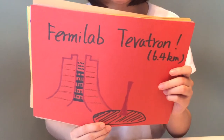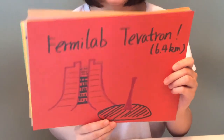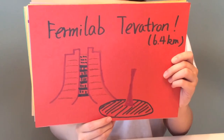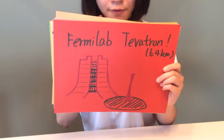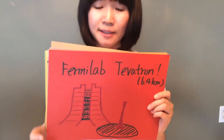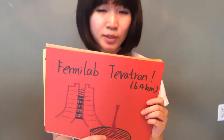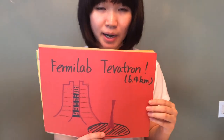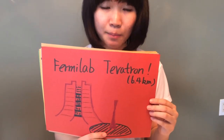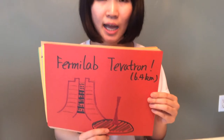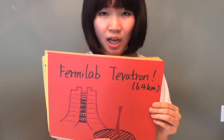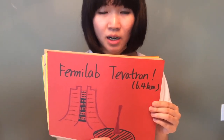The last one I'm going to talk about is the famous Fermilab Tevatron with a 64 km path length. It was used as a proton-antiproton collider. However, this project was shut down on September 30, 2011 due to budget cuts.